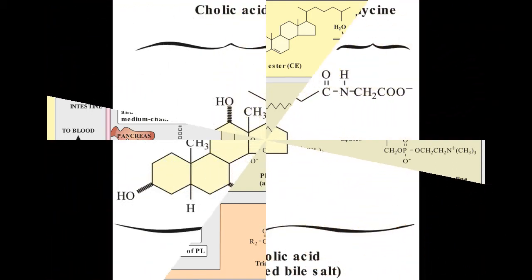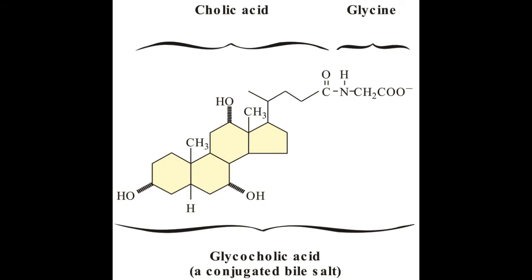Emulsification of dietary lipid in the small intestine — the critical process of emulsification of dietary lipids occurs in the duodenum. Emulsification increases the surface area of the hydrophobic lipid droplets so that the digestive enzymes, which work at the interface of the droplet and the surrounding aqueous solution, can act effectively. Emulsification is accomplished by two complementary mechanisms: use of the detergent properties of the conjugated bile salts, and mechanical mixing due to peristalsis.